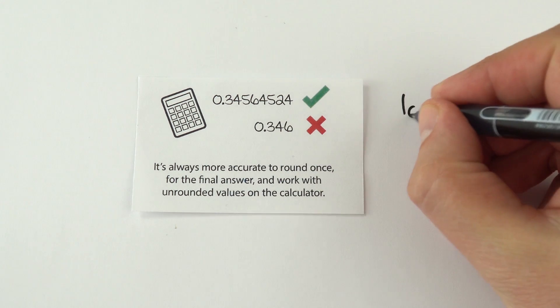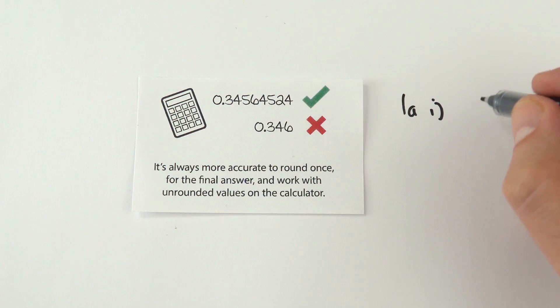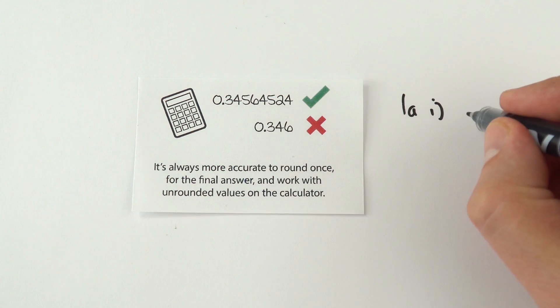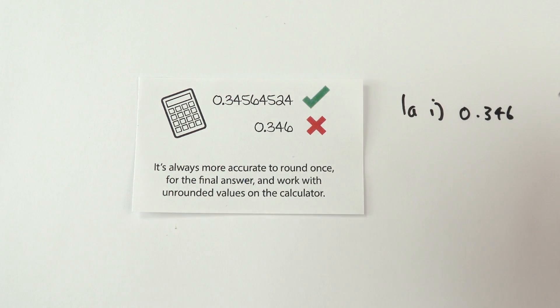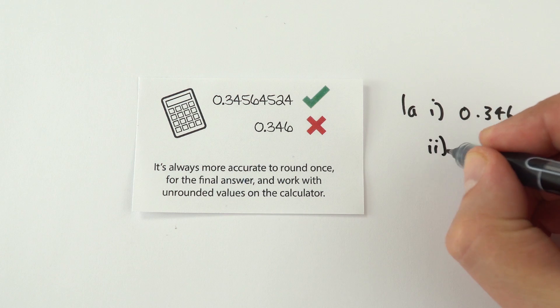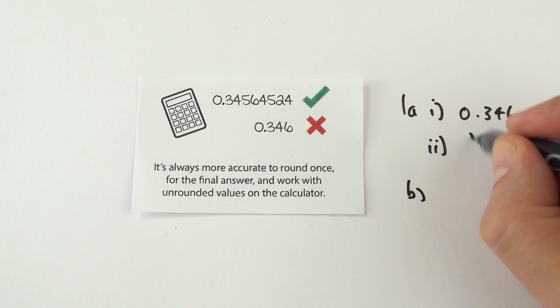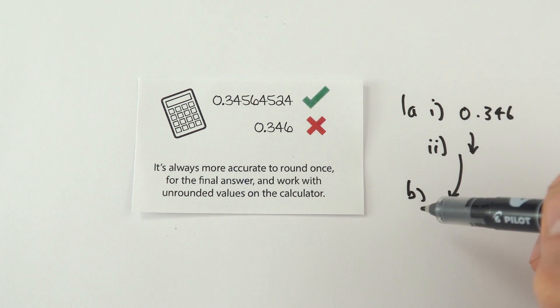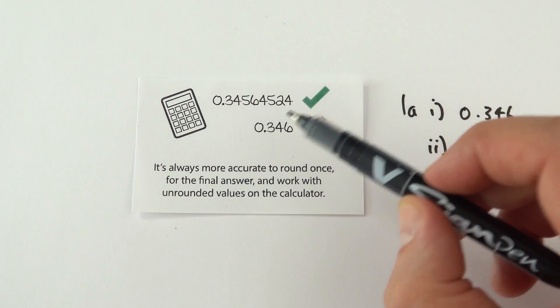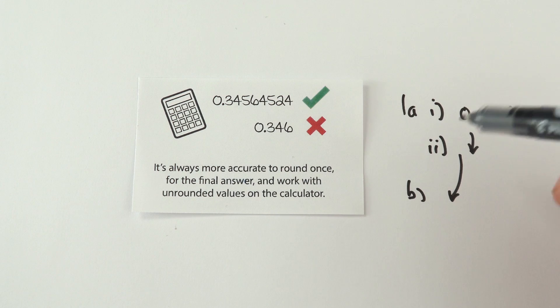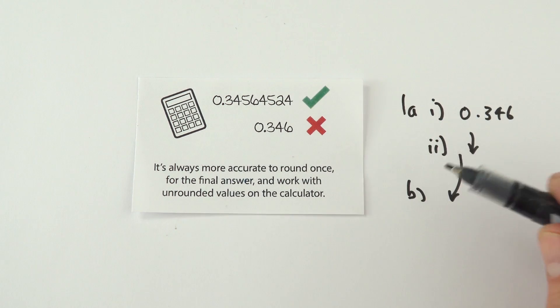This comes up all the time in lots of past paper examiner's reports. Always make sure that you only round your answer at the very end of a question. Don't round your answer midway through. For example, your answer might be 0.3456, and it might only be appropriate to give your final answer as 0.346 because you've only got three significant figures in the data. But you might need to use this in part 2 or part B. If you use this rounded answer in subsequent calculations, these answers aren't going to be correct and you're risking losing marks.